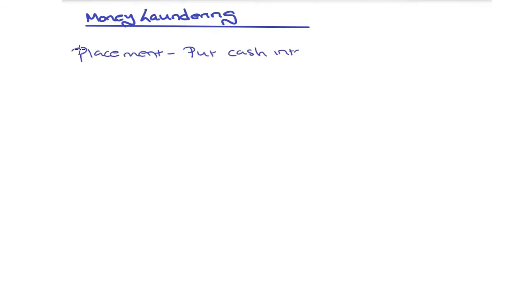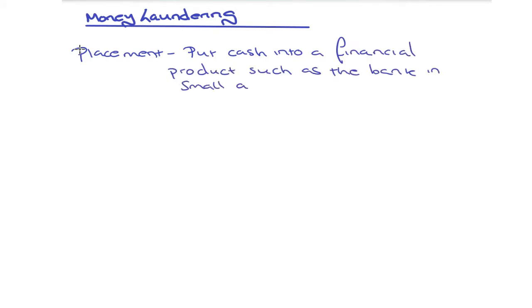The first stage is called placement. This is where they might put cash into a financial product like a bank, but they'll only do this in very small amounts every so often, because putting a huge amount of cash into the bank at once would raise suspicion. By doing it this way, they avoid initial suspicion.